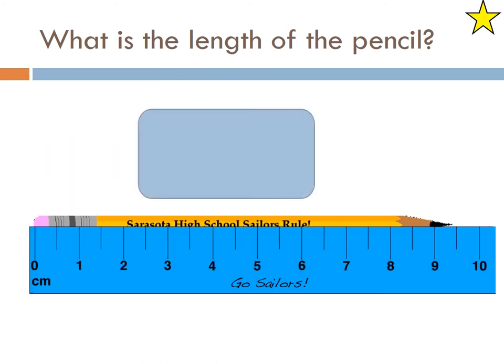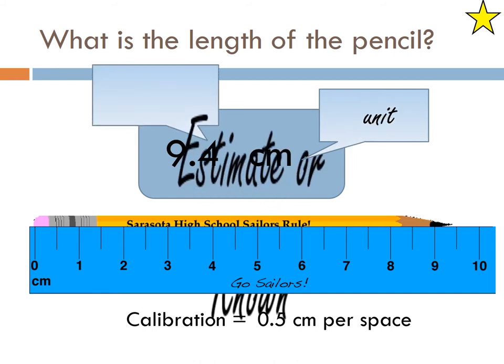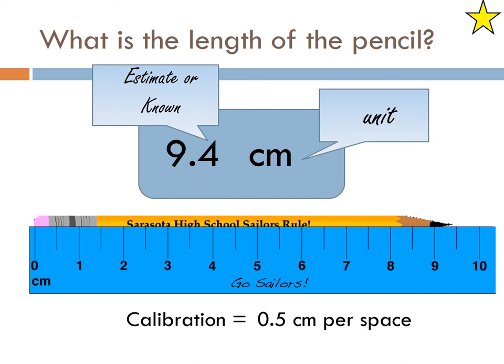Here we have a calibration of 1 divided by 2, which is 0.5 centimeters per space. And again, we can estimate to be, it hasn't reached 9.5, so we're going to say 9.4. Again, the unit is centimeters. So is the 0.4 an estimate or a known? Again, estimate. And the 9, an estimate or a known? It's a known. So notice again that last digit is always going to be an estimate. If you're not certainly certain, then you know it's an estimate. If it is certain, then you need to go one more digit after.